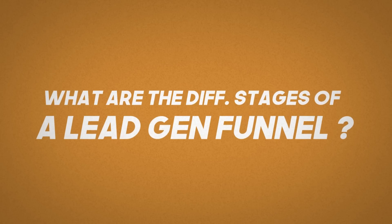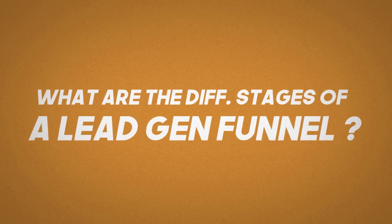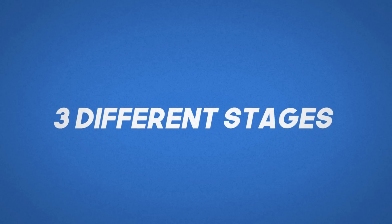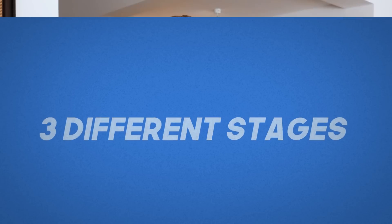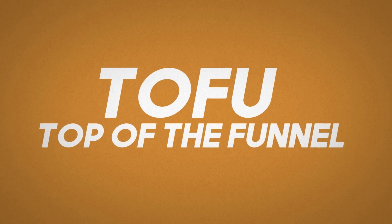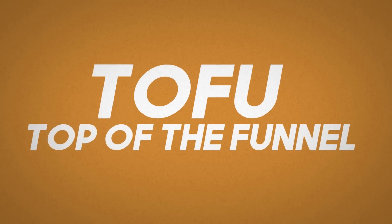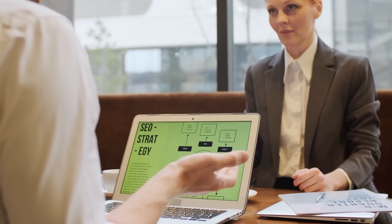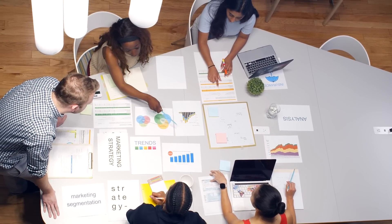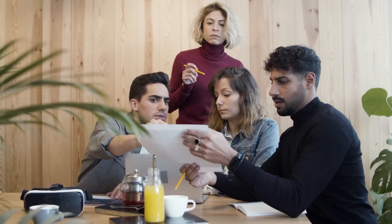What are the different stages of a lead generation funnel? Just like all marketing funnels, we have three different stages, all based on how much knowledge the user has of your business. First — and all you vegetarians are going to love this one — top of the funnel: TOFU. When potential customers first come across your company, they are at the top of the lead funnel. At this stage of the buyer journey, they're just becoming aware of your product or service.